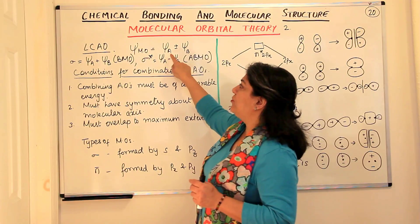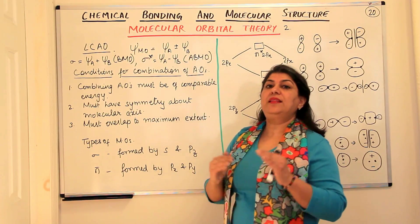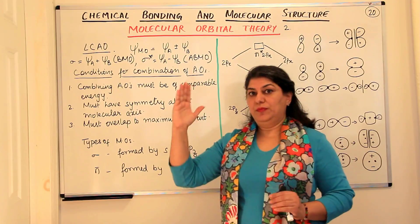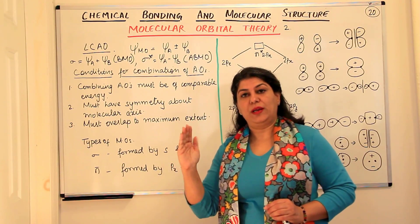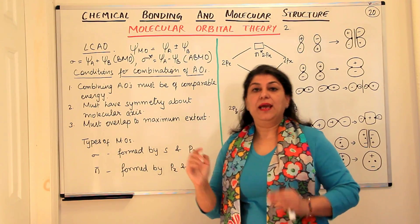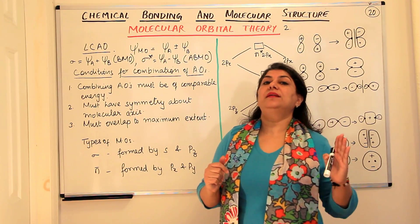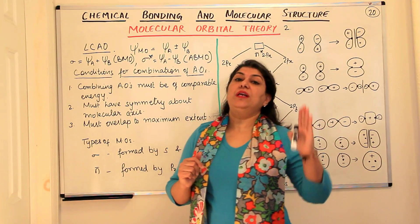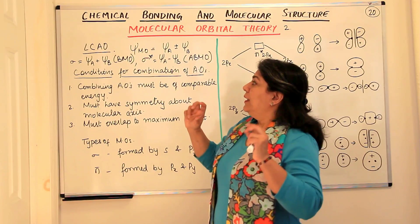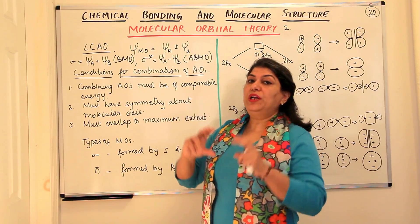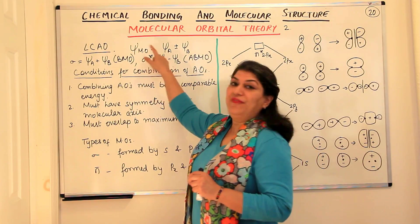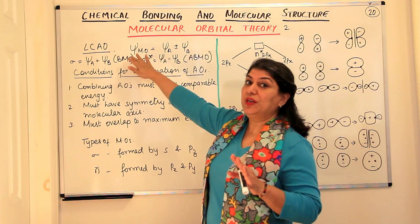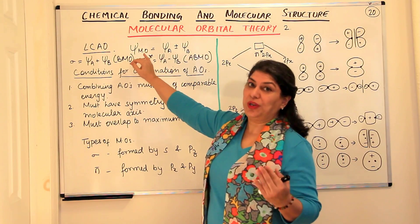If the two hydrogens are hydrogen-a and hydrogen-b, then there would be two wave functions: the wave function of the electron in hydrogen atom-a and the wave function of the electron in hydrogen atom-b. Now, for the molecular orbital—the wave function for the molecule—you cannot directly find out the wave function for the electrons in the molecular orbital.